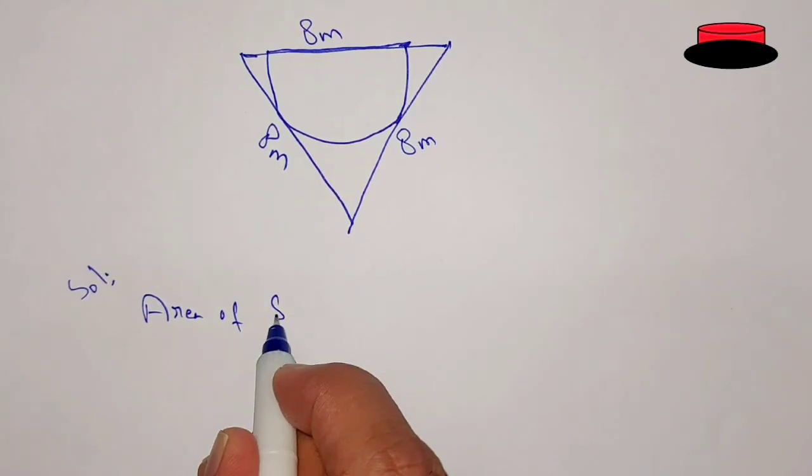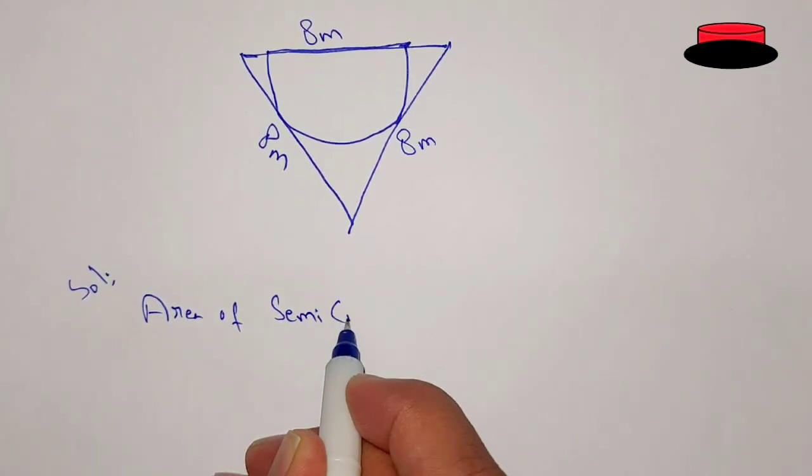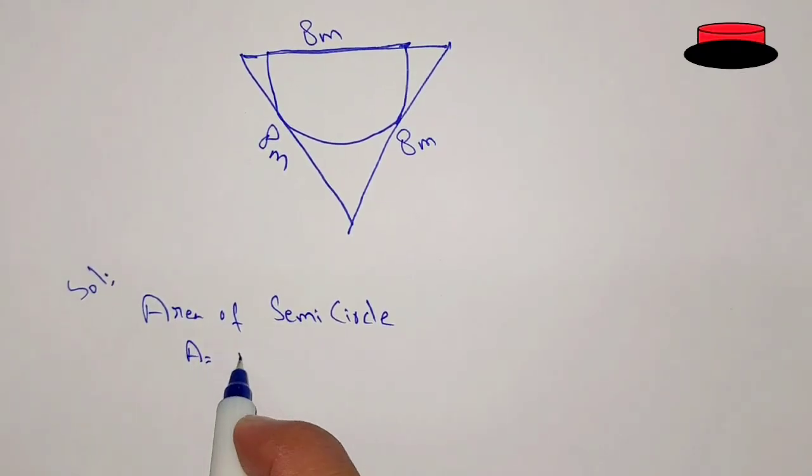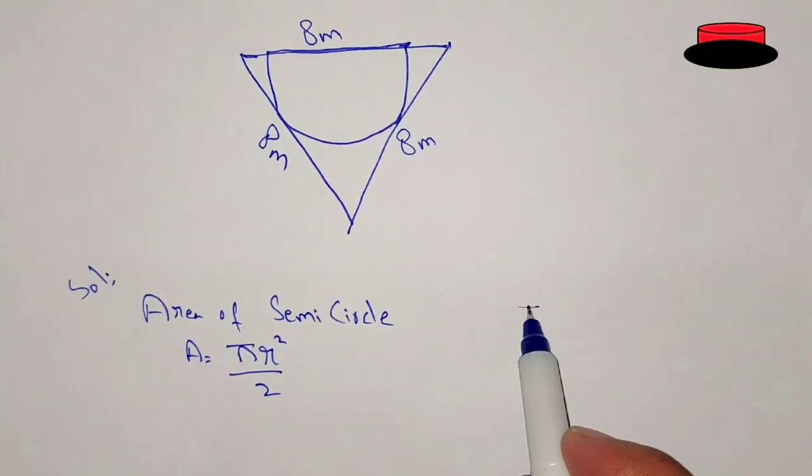We know that the area of the semicircle can be found by using the formula A equal to pi r square divided by 2. Because we use the formula pi r square for finding out the area of the circle, so for the semicircle divided by 2.